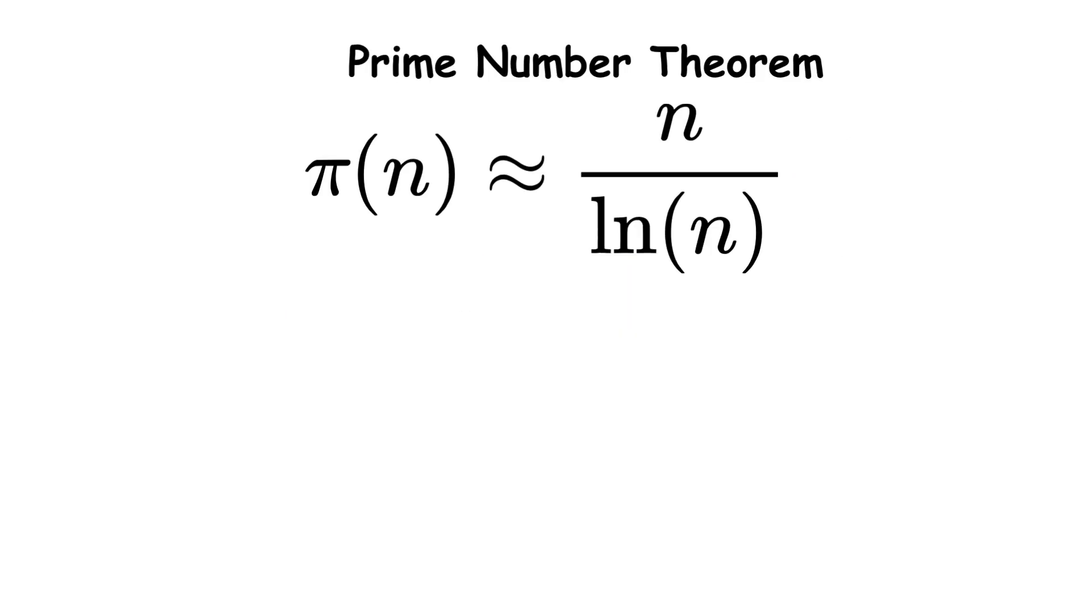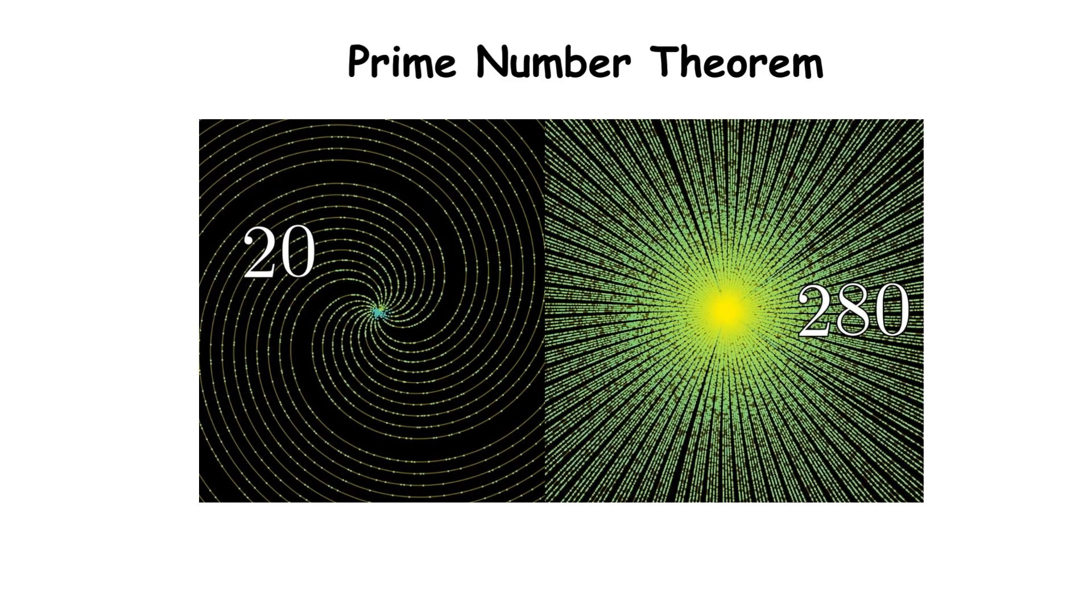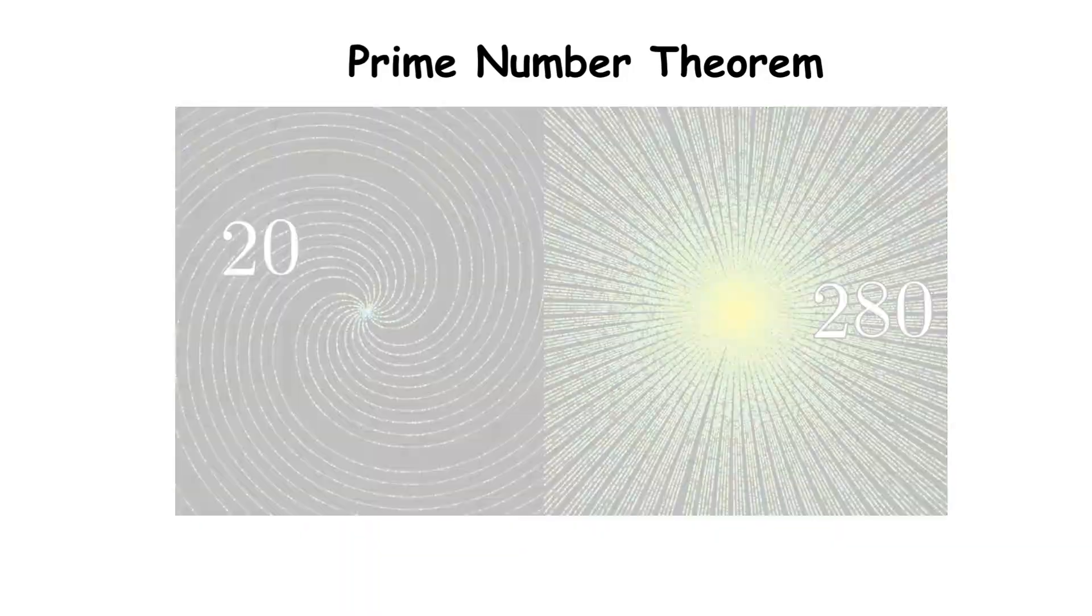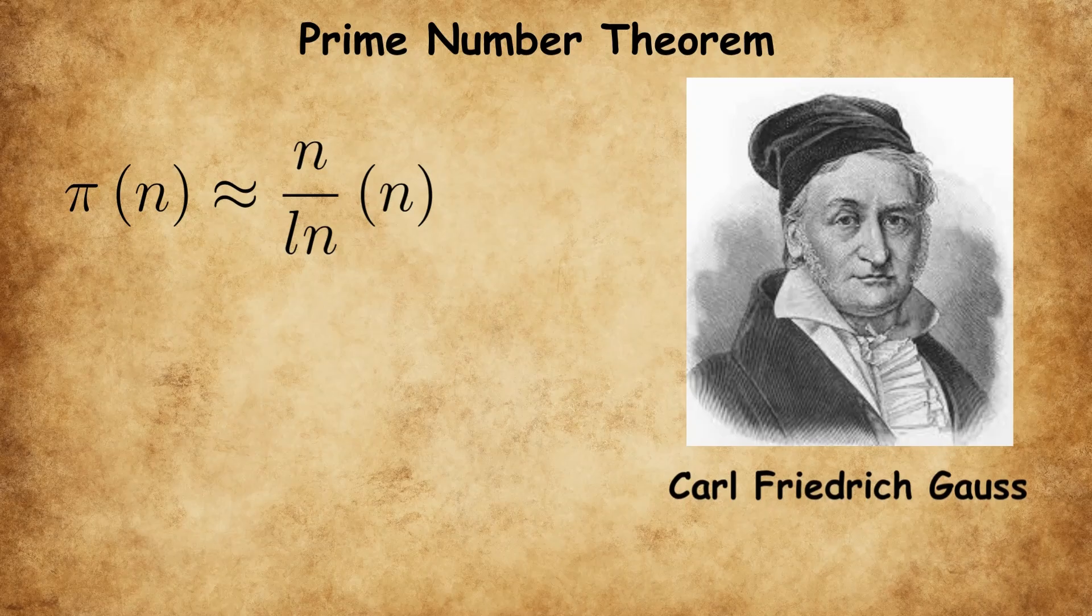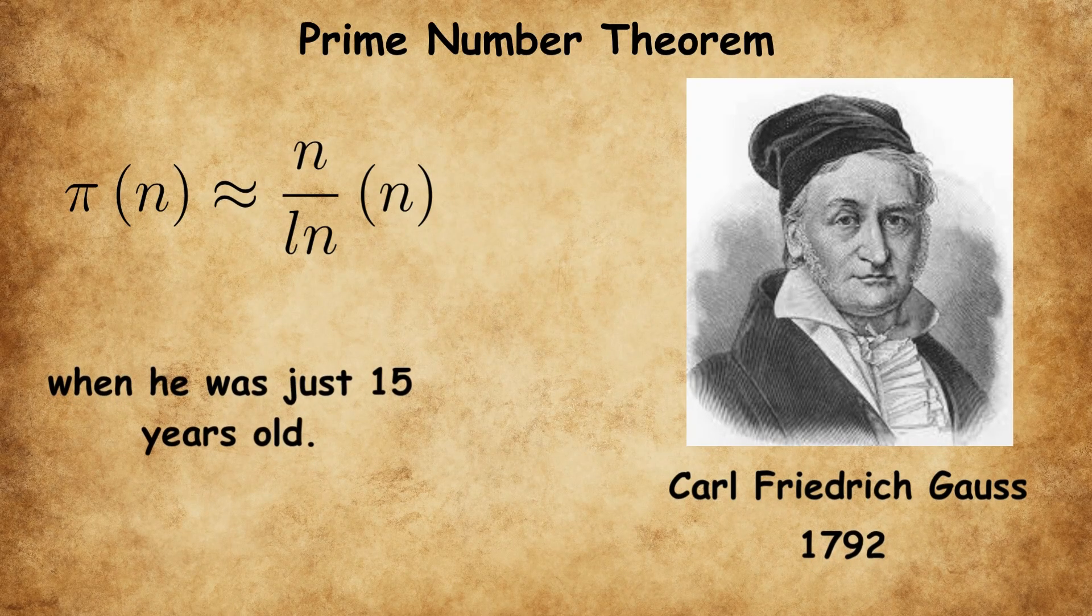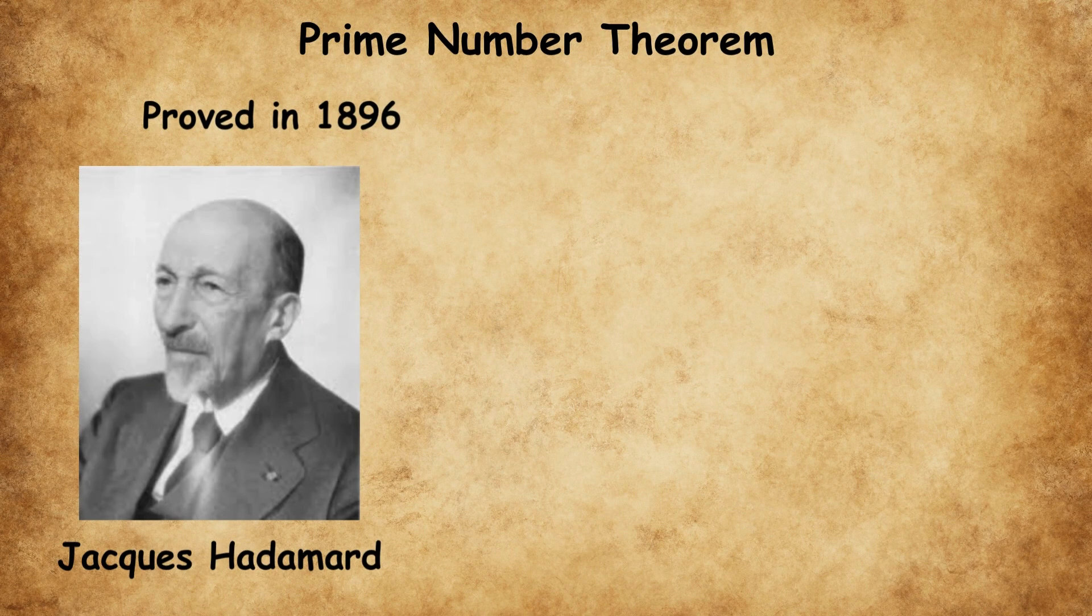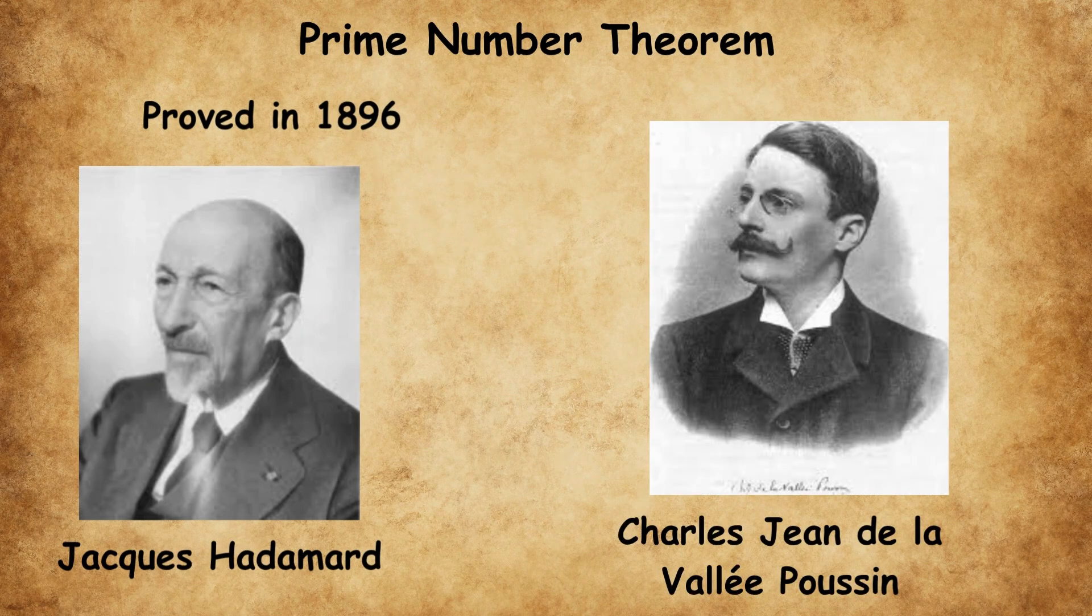Prime Number Theorem. This theorem reveals one of the most beautiful patterns hidden within the seemingly random distribution of prime numbers. Conjectured by Carl Friedrich Gauss in 1792, when he was just 15 years old, it wasn't proven until 1896 by Jacques Hadamard and Charles-Jean de la Vallée-Poussin, independently.